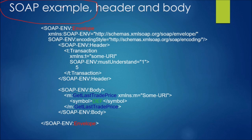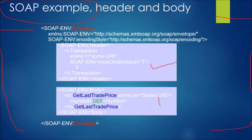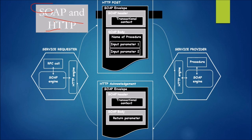Looking at the actual SOAP message structure: there is the SOAP header and the SOAP body. SOAP cannot exchange messages by itself — it needs to use HTTP or SMTP. In the diagram, the service requester and service provider communicate via SOAP envelopes (SOAP messages), where the requester posts and the provider acknowledges, both using HTTP.